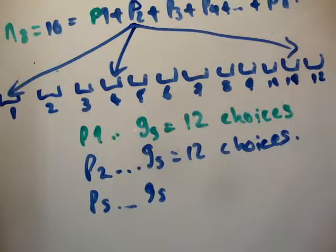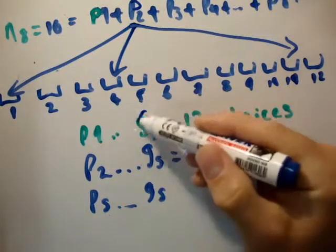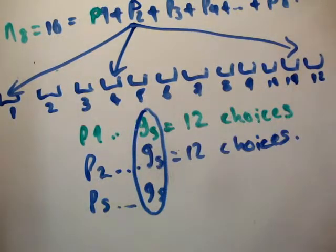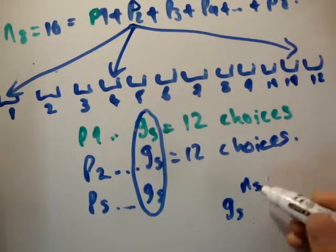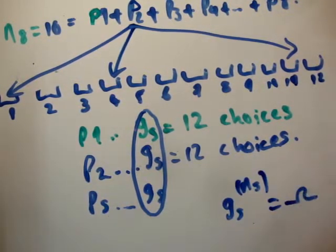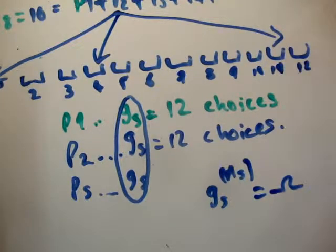So every one of the particles has g sub s choices. So the total number of combinations then you get is by multiplying them all together. So you have to multiply all of these g sub s together. Well how many times do you have to multiply them? n sub s times. So g sub s to the power of n sub s is equal to our multiplicity. So each of those particles can be put in any one of the g sub s states. So there we go.